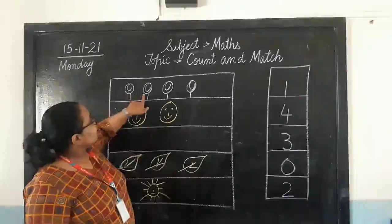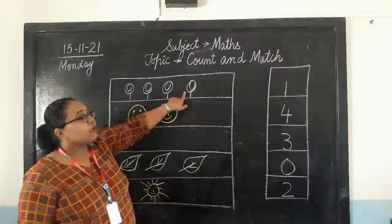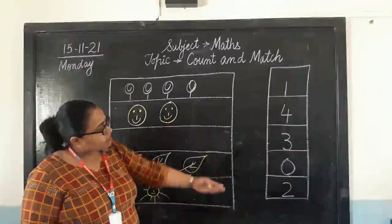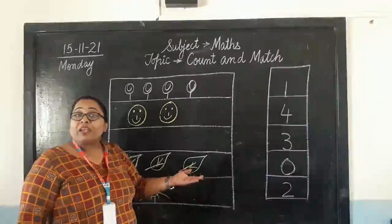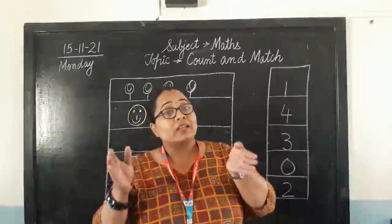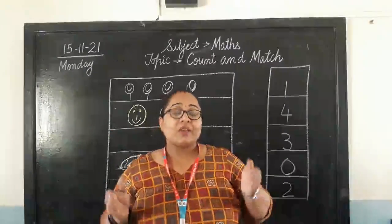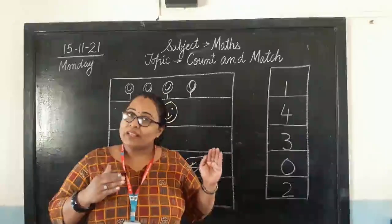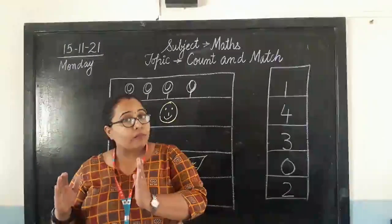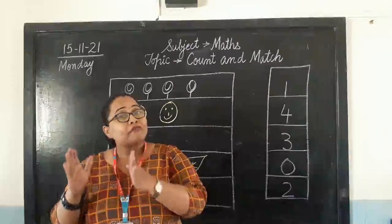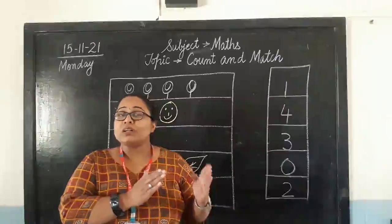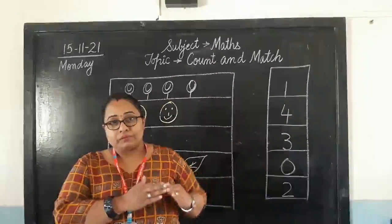Like, we have 1, 2, 3, 4. 4 lollipops. But, 4 is written somewhere else. So, what do we have? We are going to match the correct number of objects with the number. That means, we will first count the objects and after counting the given objects, we are going to do the matching work with the number.